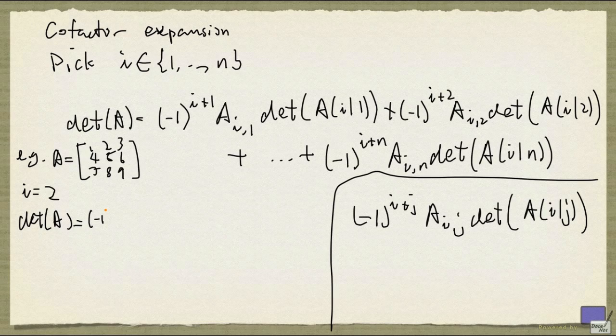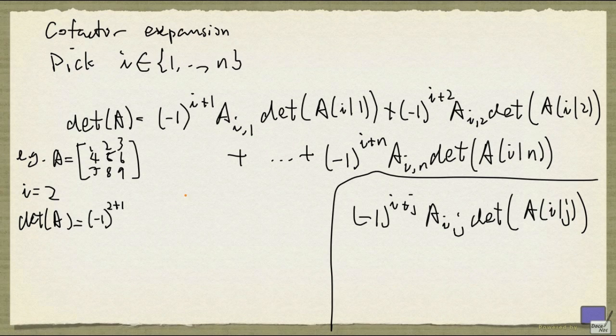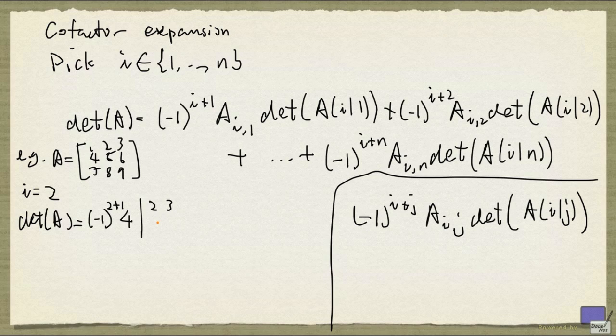So this is now (-1)^(2+1) times A_21, that's 4, and then I have to take the determinant of the matrix with row 2 and column 1 deleted. And that's just 2, 3, 8, 9.